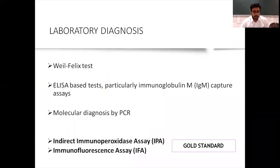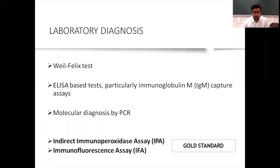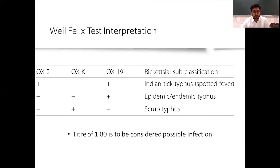Coming to diagnosis — the Weil-Felix test is commonly done in general practice. ELISA-based tests, particularly IgM capture assays, molecular diagnosis by PCR, and indirect immunoperoxidase assay and immunofluorescence assay are the gold standard tests. For Weil-Felix interpretation: in scrub typhus, OXK is positive while OX2 and OX19 are negative; in epidemic or endemic typhus, OX19 is positive and OXK is negative. A titer of 1:80 and above is considered a possible infection.